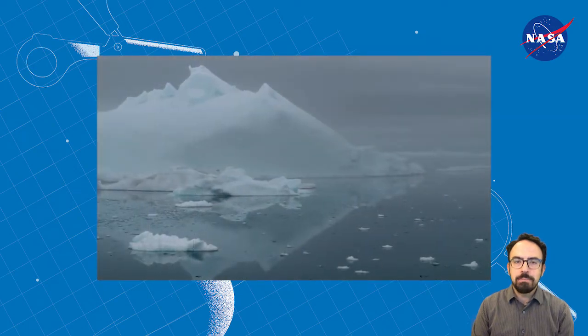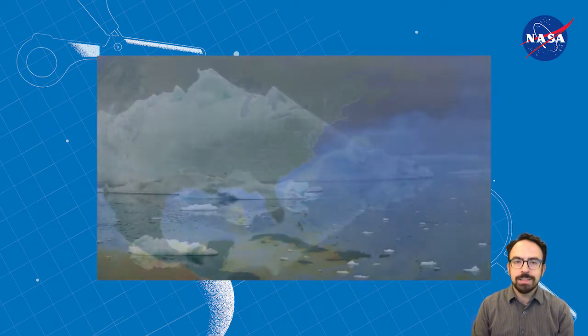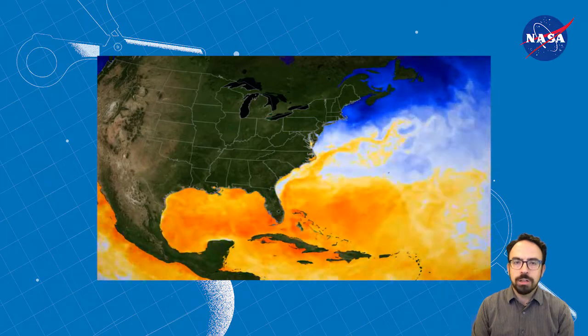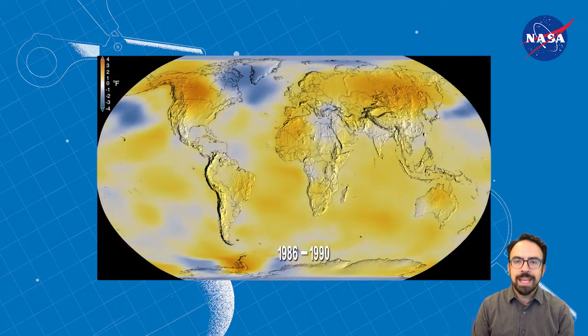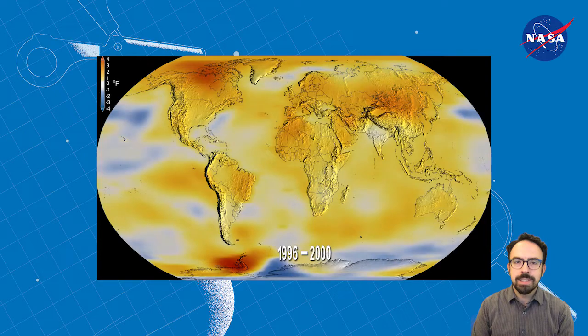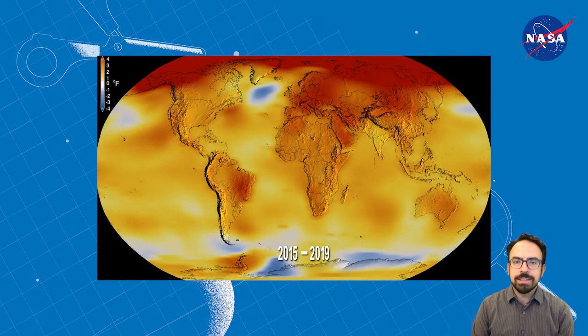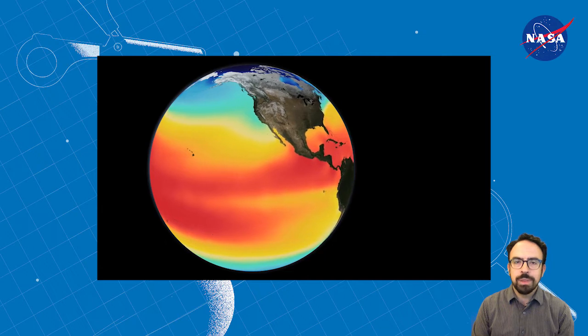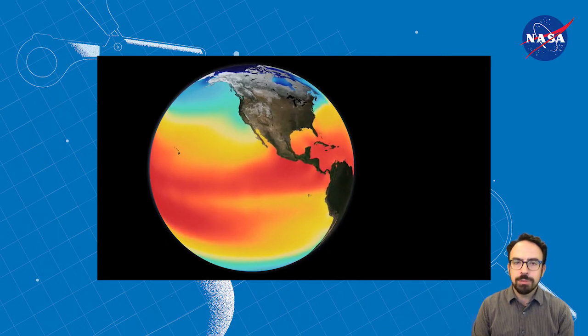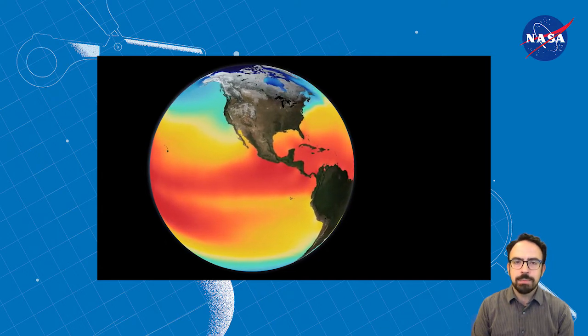Maybe you've heard that melting ice adds to sea level rise, but did you know that the warming of ocean water also raises the sea level? As temperatures around the planet rise, the temperature of ocean water also rises. This causes something called thermal expansion. Thermal expansion causes the volume of water, or the amount of space it takes up, to increase.